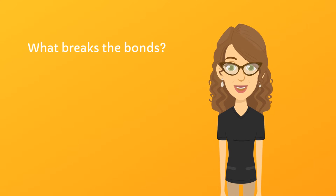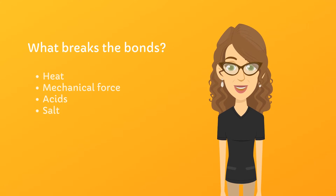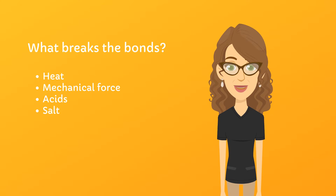You may be wondering what breaks the internal bonds so the process can begin. Proteins can be denatured by heat, mechanical force, acids, or salt. We'll start off by focusing on the heat process, which of course is cooking.